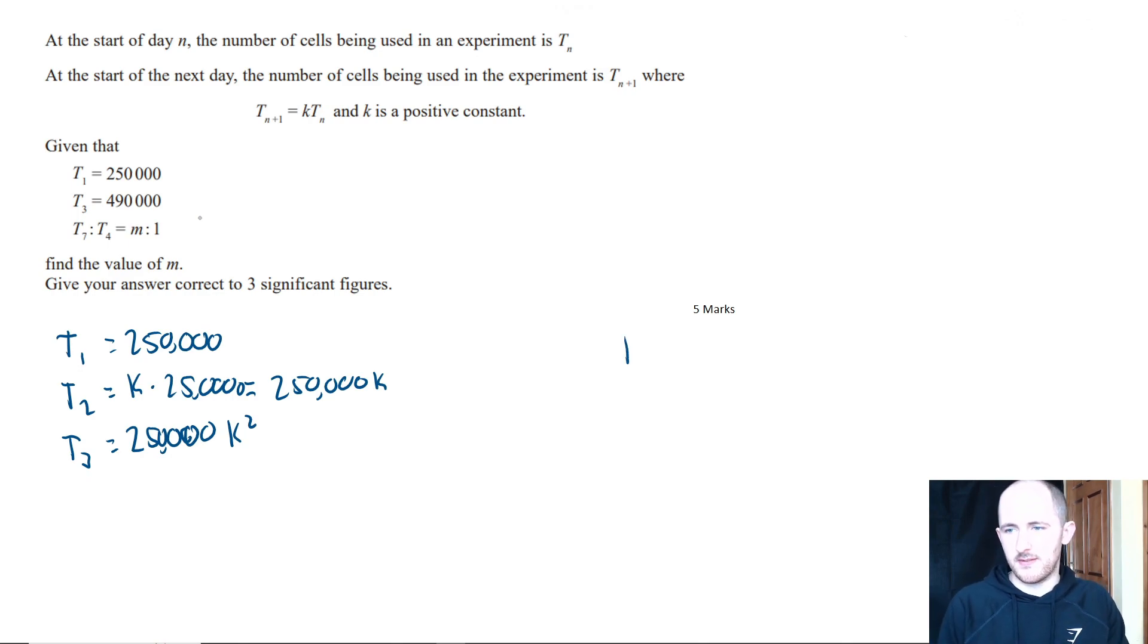That's pretty much all the information they give us. They do give us the fact that t_7 to t_4 is n to 1, but since we don't know what n is, it's a bit of a useless piece of information for now. So what we might want to start with is actually working out what t_7 and t_4 actually are. That would be really important. To do that, we need to work out what k is.